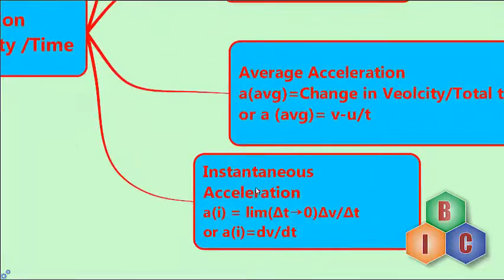Instantaneous acceleration is the acceleration of the body at any instant of time. It is given by the calculus expression: limit of Δv/Δt as Δt tends to zero, or dv/dt. Here dv is the change in velocity, and dt indicates it is the rate of change of velocity at any particular instant of time.